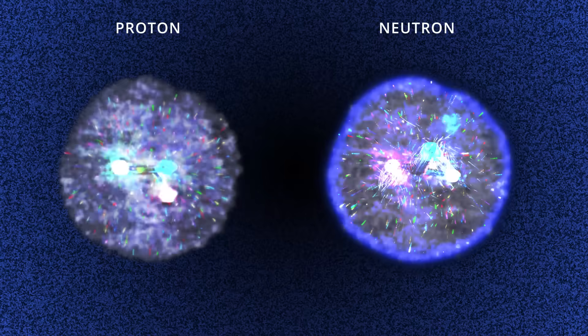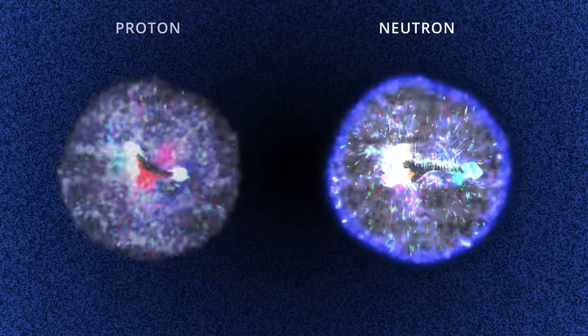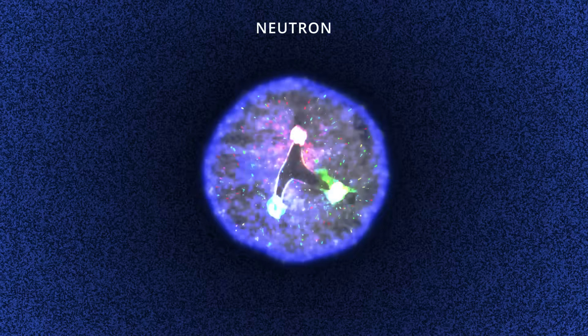Atomic nuclei contain not only positively charged protons, but neutrally charged neutrons. Now while a proton can exist by itself in a stable form,